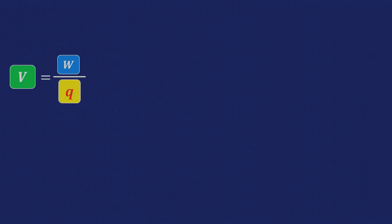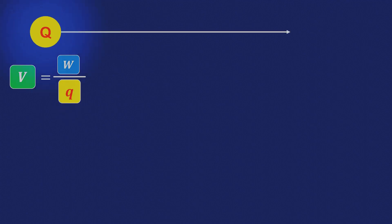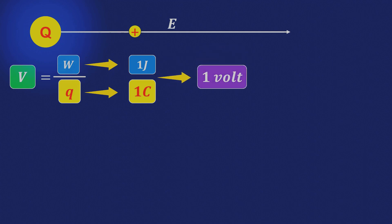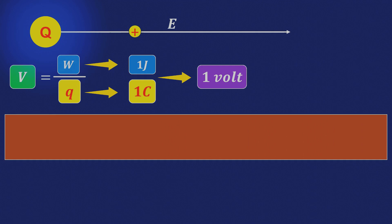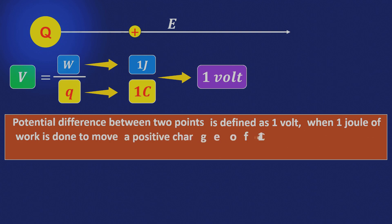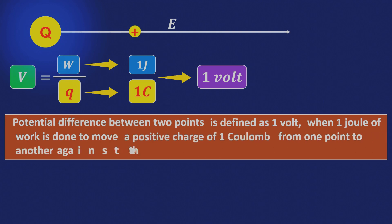In the previous video, we understood that the potential difference V is equivalent to the work done by a charge in an electric field. In this context, if we need to do 1 Joule of work to move a 1 Coulomb charge from one point to another against the direction of the electric field, then our potential difference V will be 1. The potential difference between two points is defined as 1 V when 1 Joule of work is done to move a positive charge of 1 Coulomb from one point to another against the force of electrostatics.